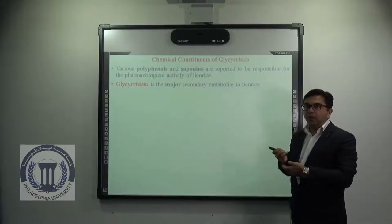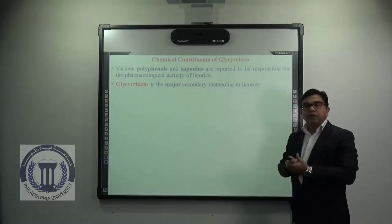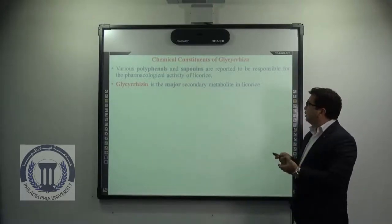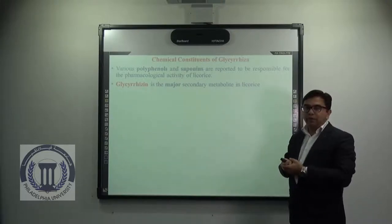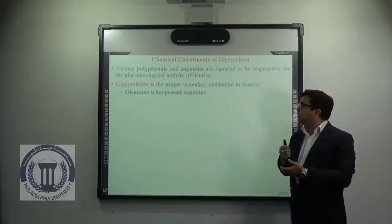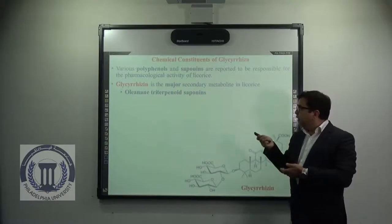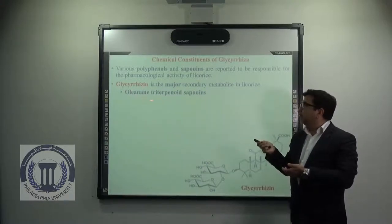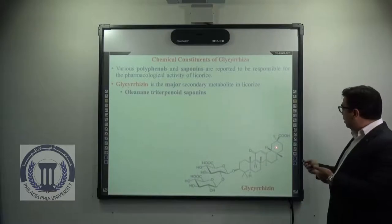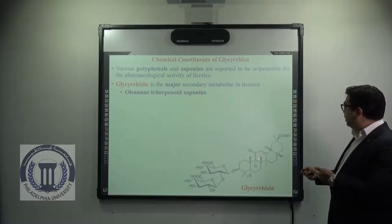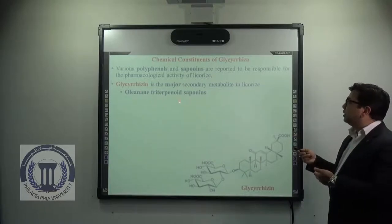Among all of them, glycyrrhizin is the major secondary metabolite found in licorice and is responsible for the major pharmacological activities. It is a type of oleanane triterpenoid saponin. You will see the structure of glycyrrhizin, which is a saponin because it contains a pentacyclic triterpenoidal ring, so it comes under the class of oleanane triterpenoid saponins.